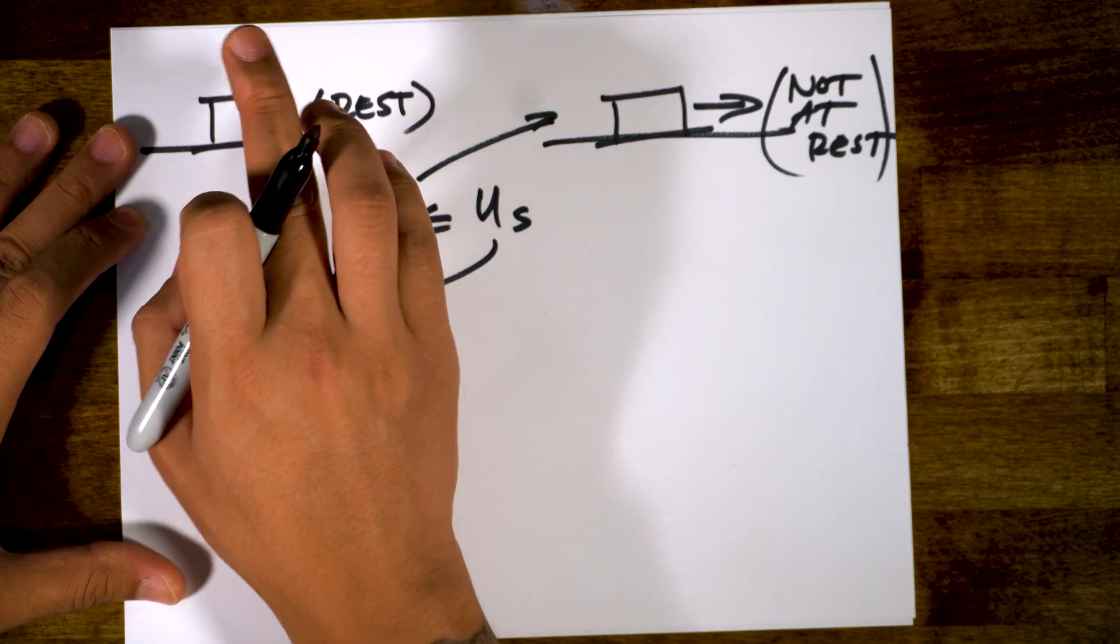I guess I could have flipped them around the other way. Whatever. Now let's imagine that we're trying to zoom in here. The interactions between the surface of the block and the surface of the table. So, we're zooming in everyone.